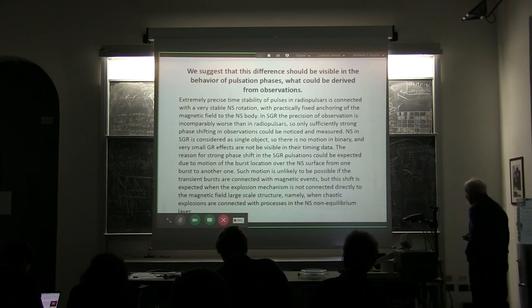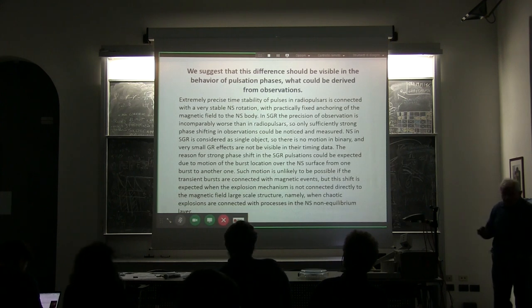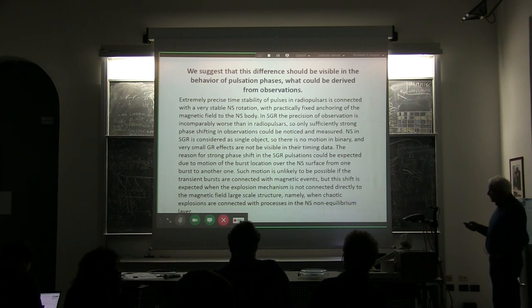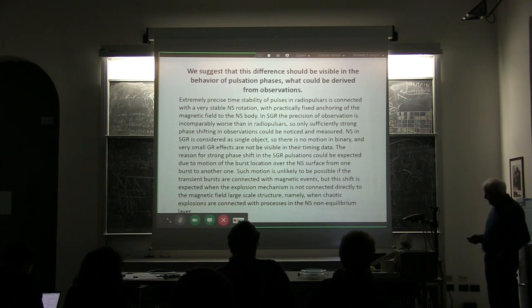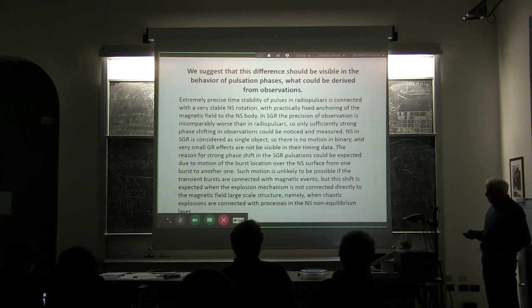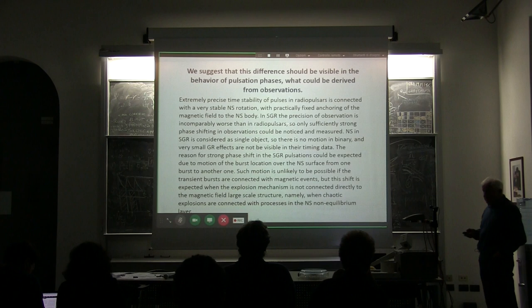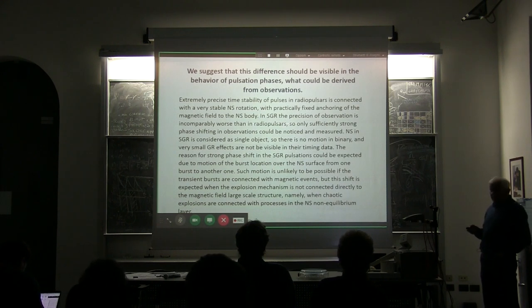But let us return to soft repeaters. Soft repeaters had been their discovery and their interpretation went through several transformations. The first models of gamma rays burst appeared soon after its discovery in 1974 and the most results which still are only confirmed by other observations had been obtained by Mazets and his group in an experiment called KONUS.